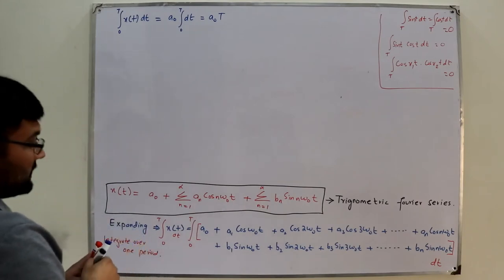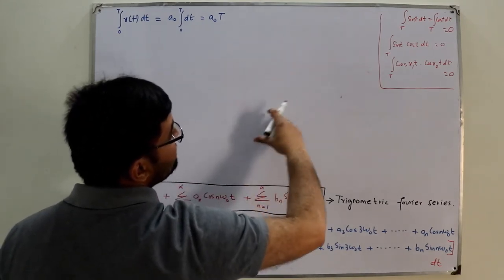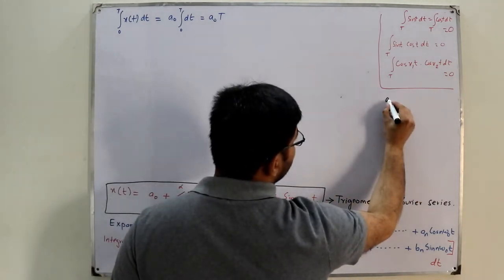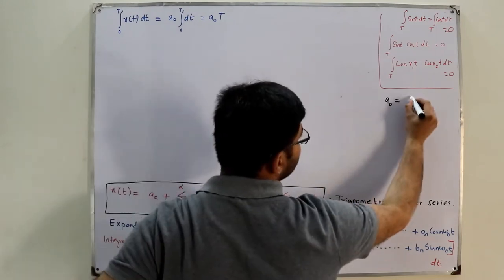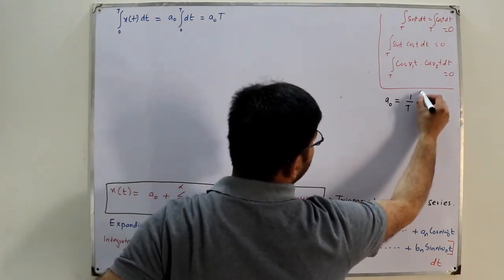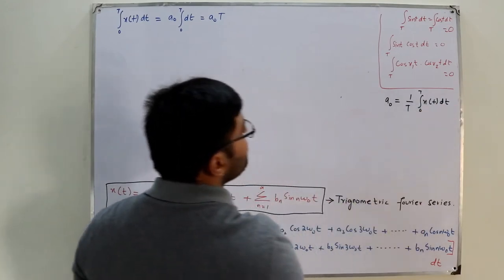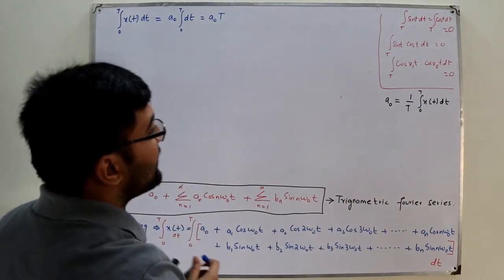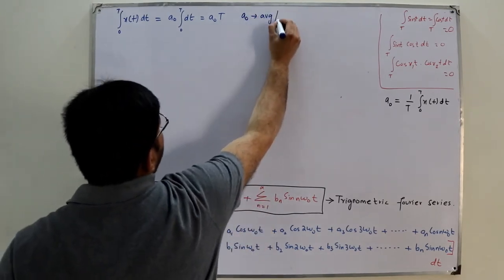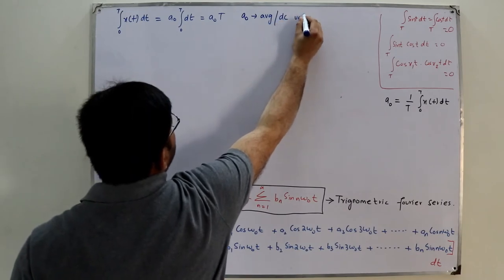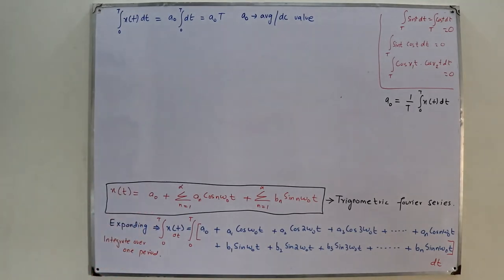This means a₀ = (1/T) ∫₀ᵀ x(t) dt. This a₀ gives the average, or DC value, of the signal. This is how we calculate a₀.